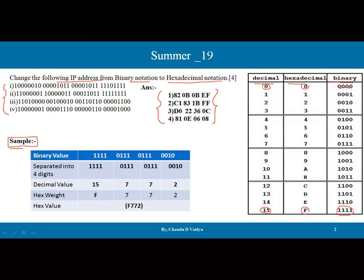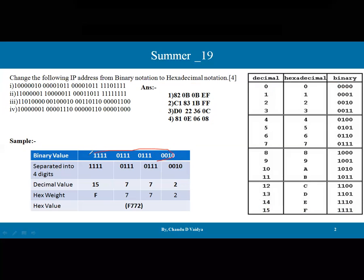Let's take a sample example where the binary value is 1 1 1 0 1 1 0 1 1 1 0. To convert this binary number to hexadecimal, we work from the right side and split the number into groups of four binary digits. This combined number is separated into groups of four digits, then four digits, then four digits.